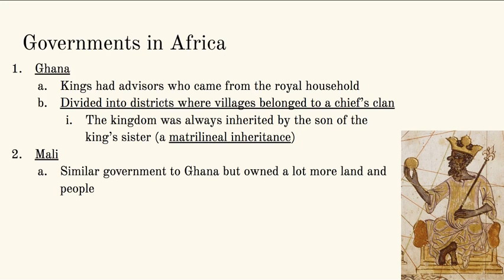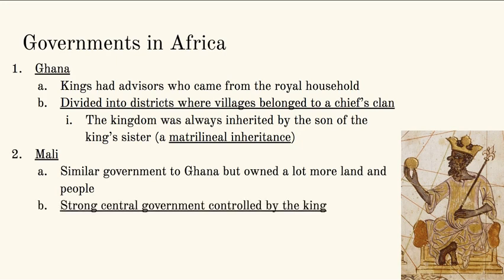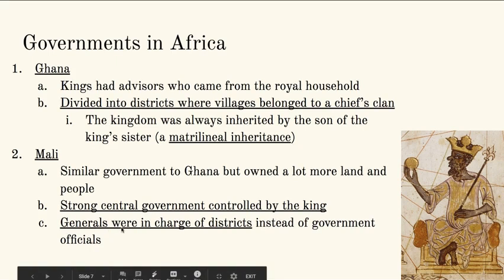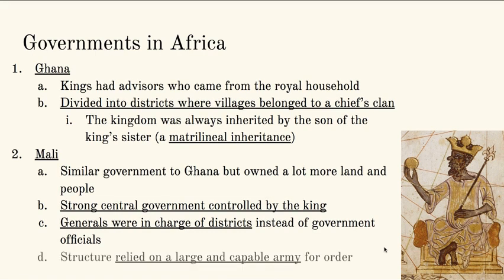Mali had a similar government to Ghana, but they were a lot larger with more land and more people. They had a strong central government controlled by the king — the king controls everything and has the last say. What they did was turn it more into a military district system where generals are in charge of those districts. Ghana divided into districts where the chief's clan was there, keeping their culture with somebody above the chief in charge. But with Mali, there's a strong central government where the king is in control of everything and his generals are in charge of the districts instead of having that family tie. The structure relied on a very large and capable army — if you have generals in charge of districts, you have to have a good army you can trust. Mali was much more of a military empire in comparison to Ghana.